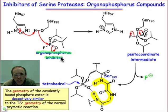Sarin, this organophosphorus inhibitor with the structure shown here, doesn't look anything like the peptide substrate. So how is it that there's a role of molecular mimicry that goes on here?